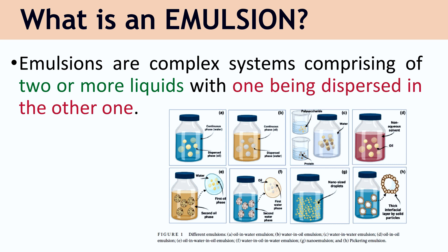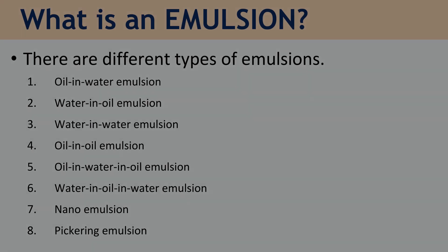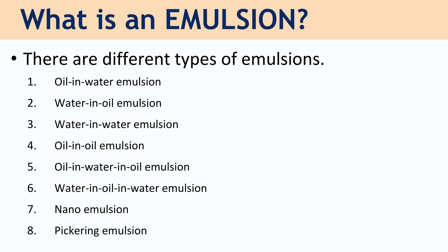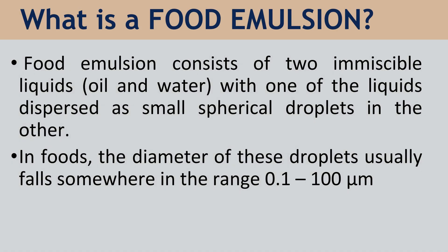Emulsions are complex systems comprising two immiscible liquids with one being dispersed in the other. Food emulsions consist of two immiscible liquids with one of the liquids dispersed as small spherical droplets in the other. In foods, the diameter of these droplets usually falls somewhere in the range of 0.1 to 100 micrometres.